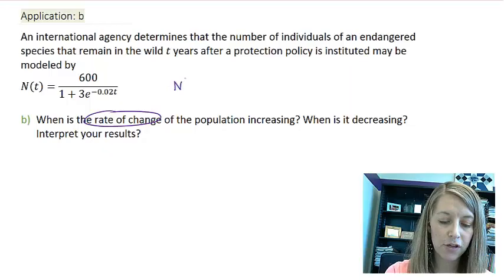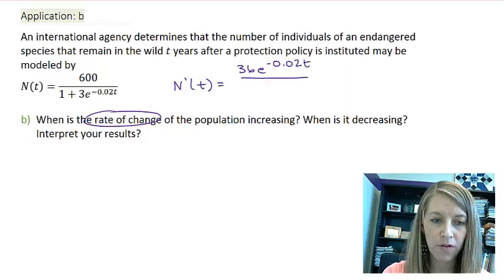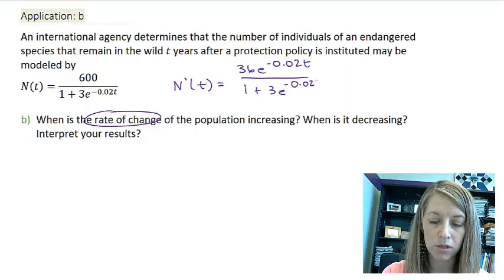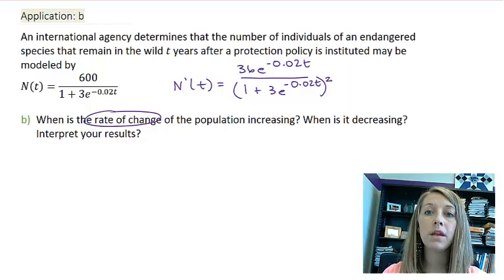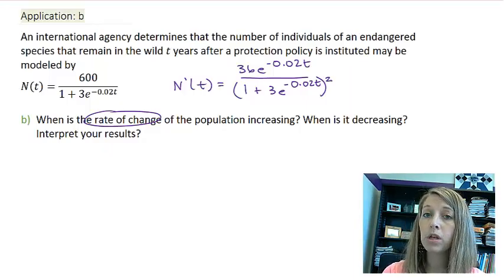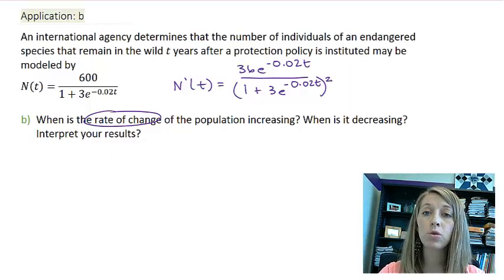Let's recall that our first derivative was 36e to the negative 0.02t over 1 plus 3e to the negative 0.02t, all squared. If you think about taking the derivative of this, you might immediately get overwhelmed. But remember, when you have something overwhelming like this, you can take the derivative by using logarithmic differentiation, and then you don't have to apply all the combinations of those rules.